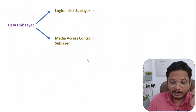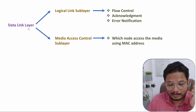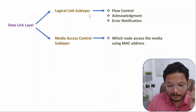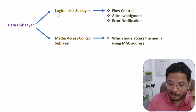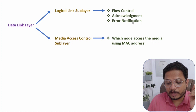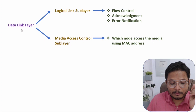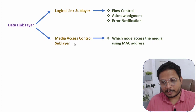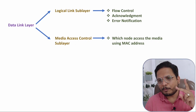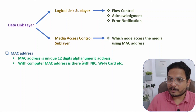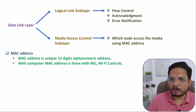The Data Link Layer is divided into two sub-layers — this is a logical division. The Logical Link sub-layer manages flow control, acknowledgement, and error notification. The Media Access Control sub-layer defines which node will access the media using its MAC address. The MAC address is a unique 12-digit hexadecimal address with a size of 48 bits.